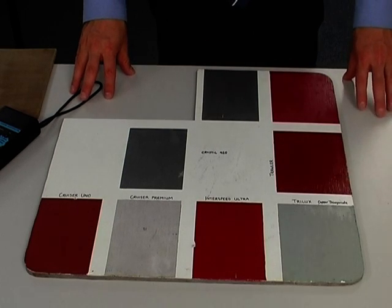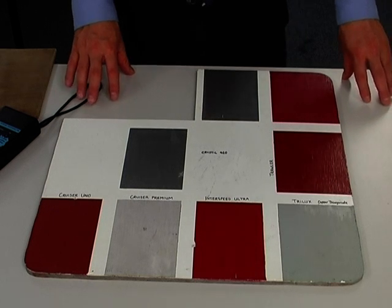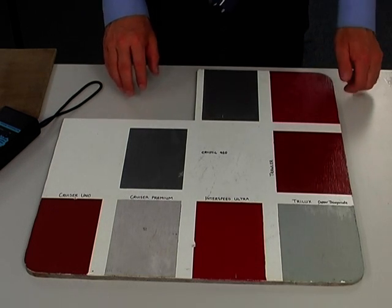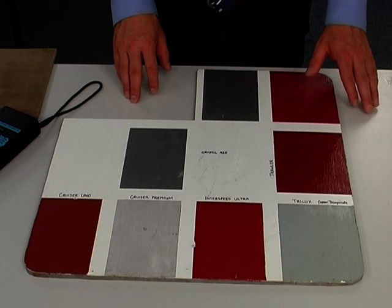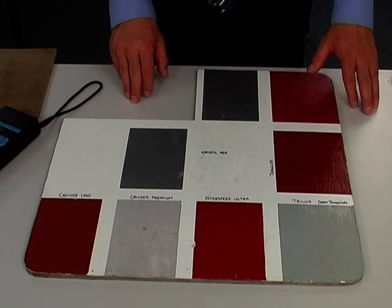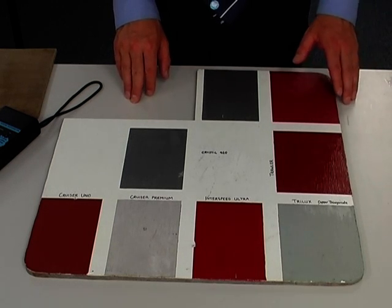As moisture meters calculate the moisture content based on the conductivity of the material, a common question asked is whether the metal present in anti-fouling paints affects the moisture meter readings.